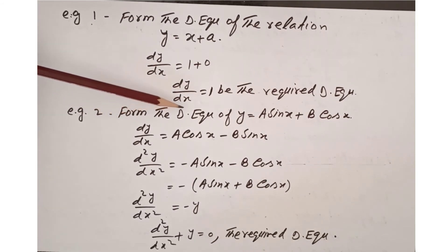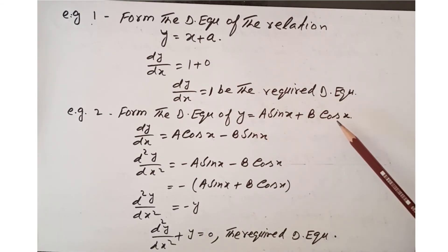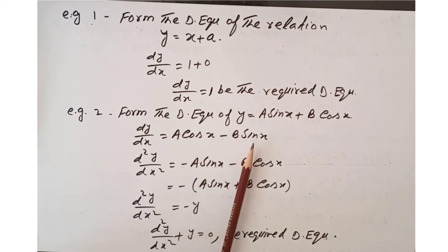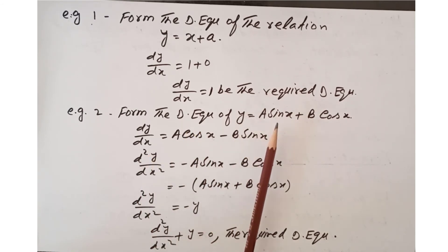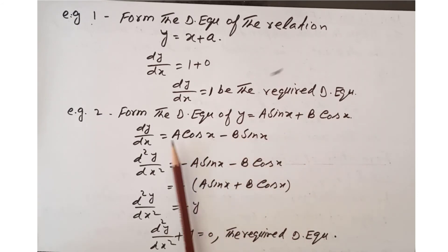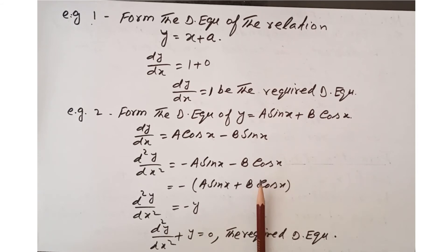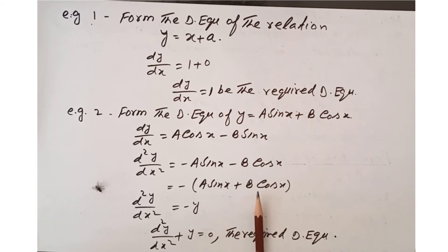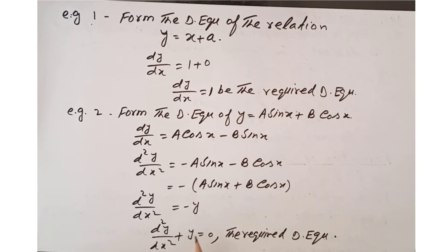In the next example, form the differential equation for y equals a sin x plus b cos x. It has two arbitrary constants a and b, so we differentiate two times. First derivative: dy over dx equals a cos x minus b sin x. Second derivative: d²y over dx² equals minus(a sin x plus b cos x). Since a sin x plus b cos x equals y, we substitute to get d²y over dx² equals minus y. The constants a and b are eliminated, giving the required differential equation.